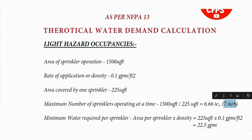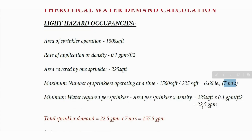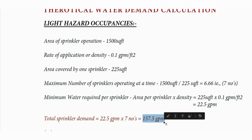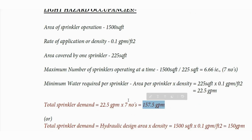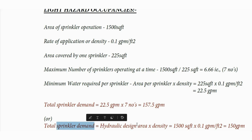With seven sprinklers, we multiply 7 by 22.5 GPM to get the sprinkler demand, which will be 157.5 gallons per minute. There is another way to calculate the sprinkler demand, which I am going to discuss now.